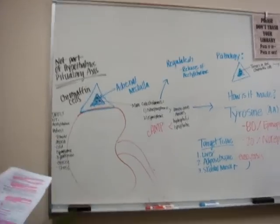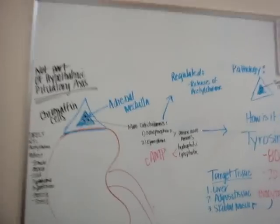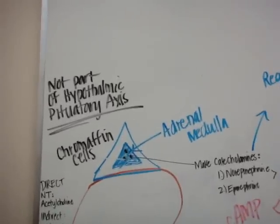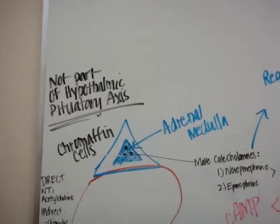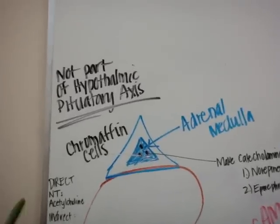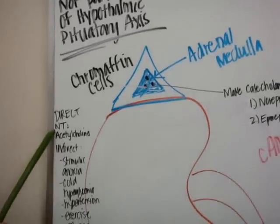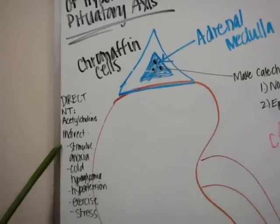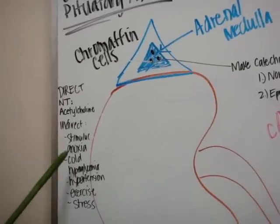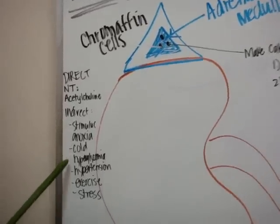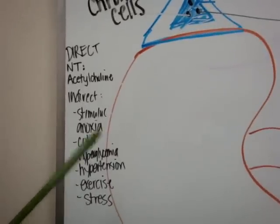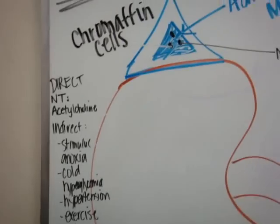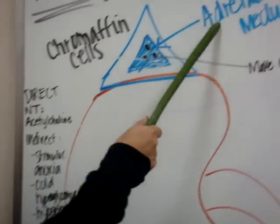Next we're going to be talking about the adrenal medulla and catecholamines. Remember that this is not a part of the hypothalamic-pituitary axis, so the direct stimulus is the neurotransmitter acetylcholine. The indirect stimuli are anoxia, cold, hyperglycemia, hypertension, exercise, and stress — and these stimulate the adrenal medulla.